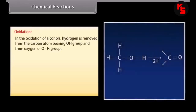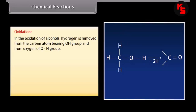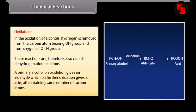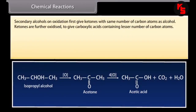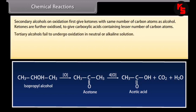Oxidation of alcohols: hydrogen is removed from the carbon atom bearing the OH group and from the oxygen of the OH group — these reactions are also called dehydrogenation reactions. A primary alcohol on oxidation gives an aldehyde, which on further oxidation gives an acid, both containing the same number of carbon atoms. Secondary alcohols on oxidation give ketones with the same number of carbon atoms. Ketones are further oxidized to carboxylic acids containing fewer carbon atoms. Tertiary alcohols fail to undergo oxidation in neutral or alkaline solution.